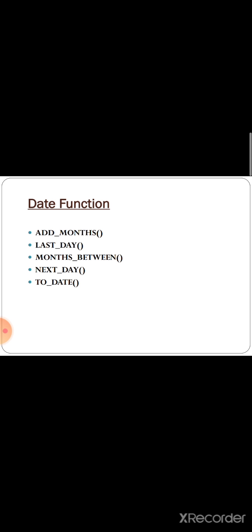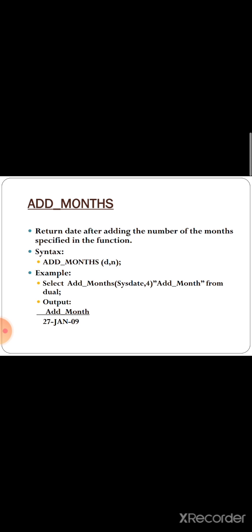The next classification is date functions. It has some types: ADD_MONTHS, LAST_DAY, MONTHS_BETWEEN, NEXT_DAY, and TO_DATE. We shall see them one by one. The first one is ADD_MONTHS — it returns the date after adding the number of months specified in the function.